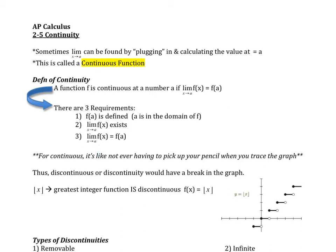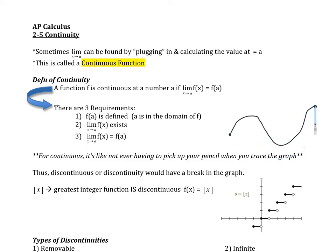We've talked about situations where the limits are different and therefore it wouldn't be continuous. Basically, if you're looking graphically at a continuous function, you can trace the whole function without ever having to pick up your pencil. As long as you can trace the whole function — so suppose I had some function that came up, came down, came back up — I can take my pencil, or my lightsaber in this case, and trace the whole thing without ever having to pick it up. Then that means it's continuous.